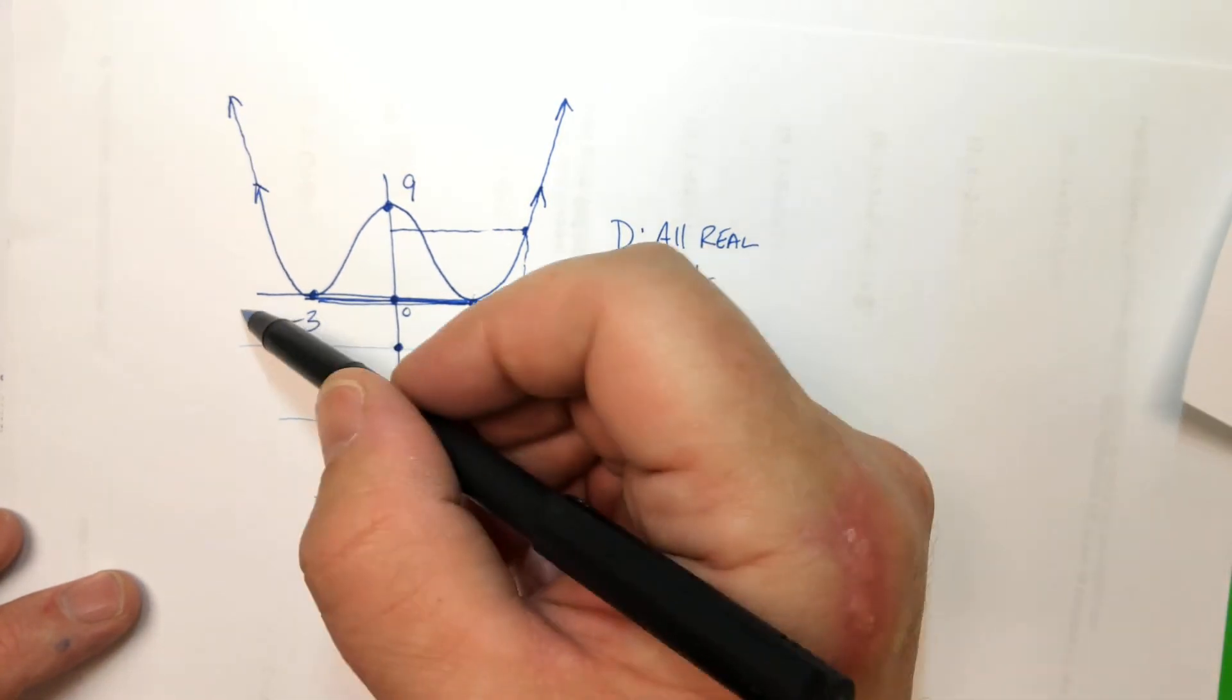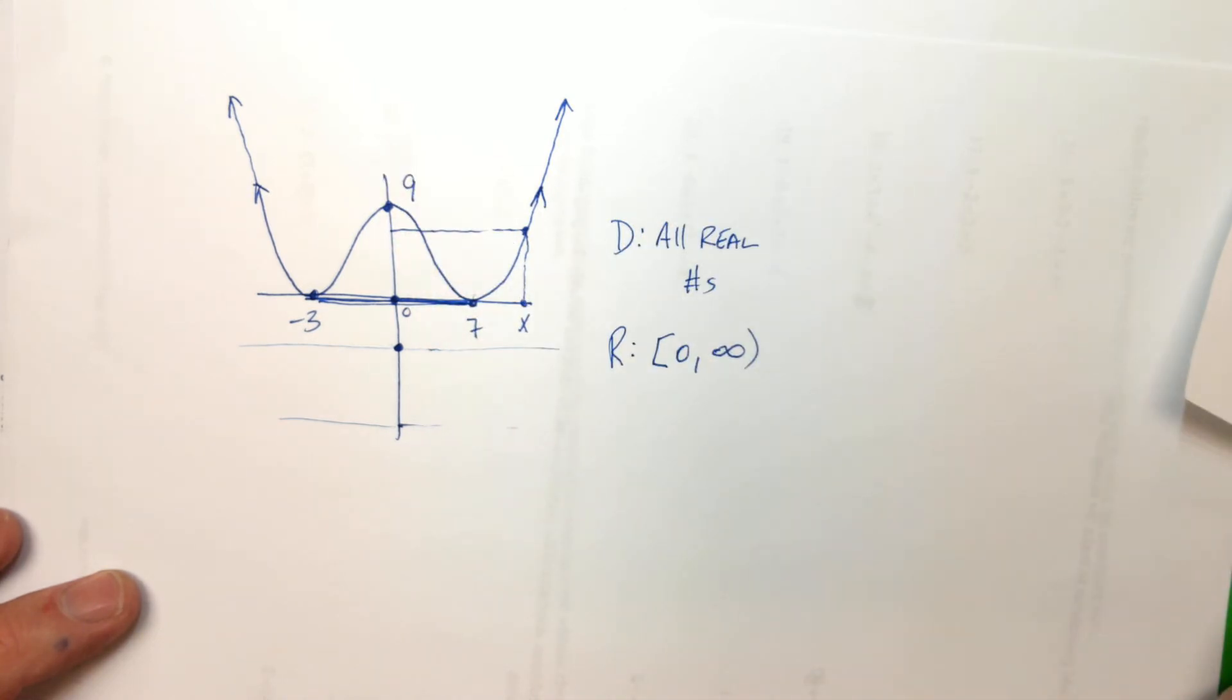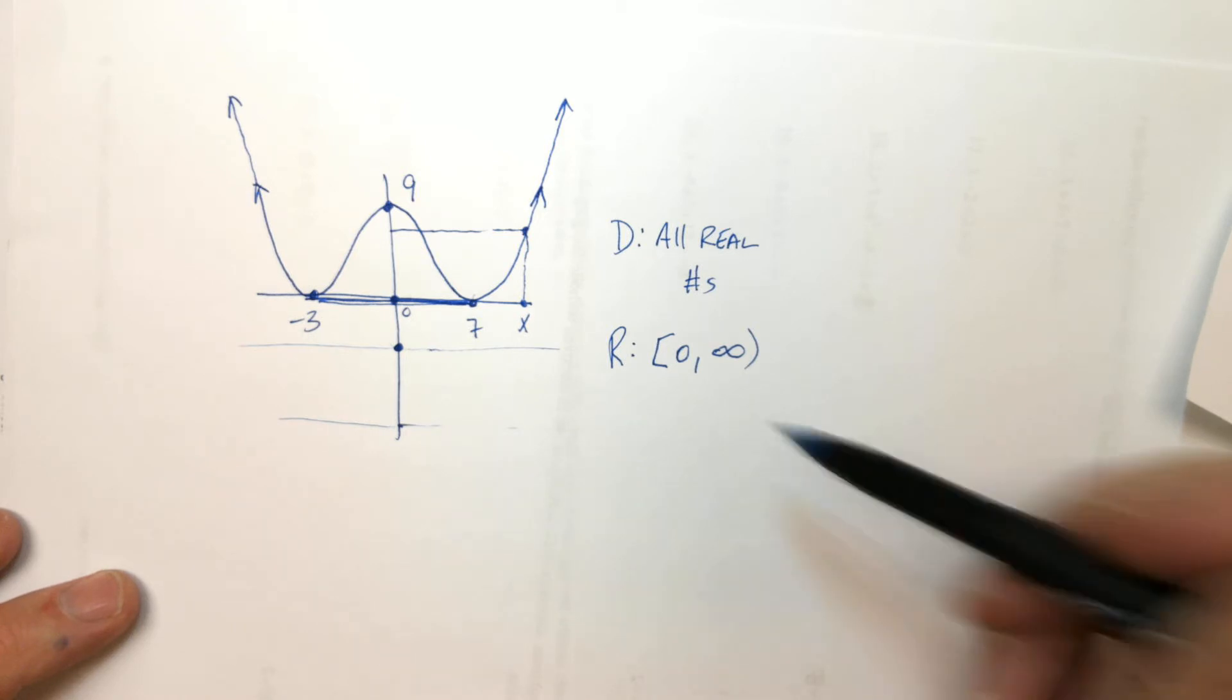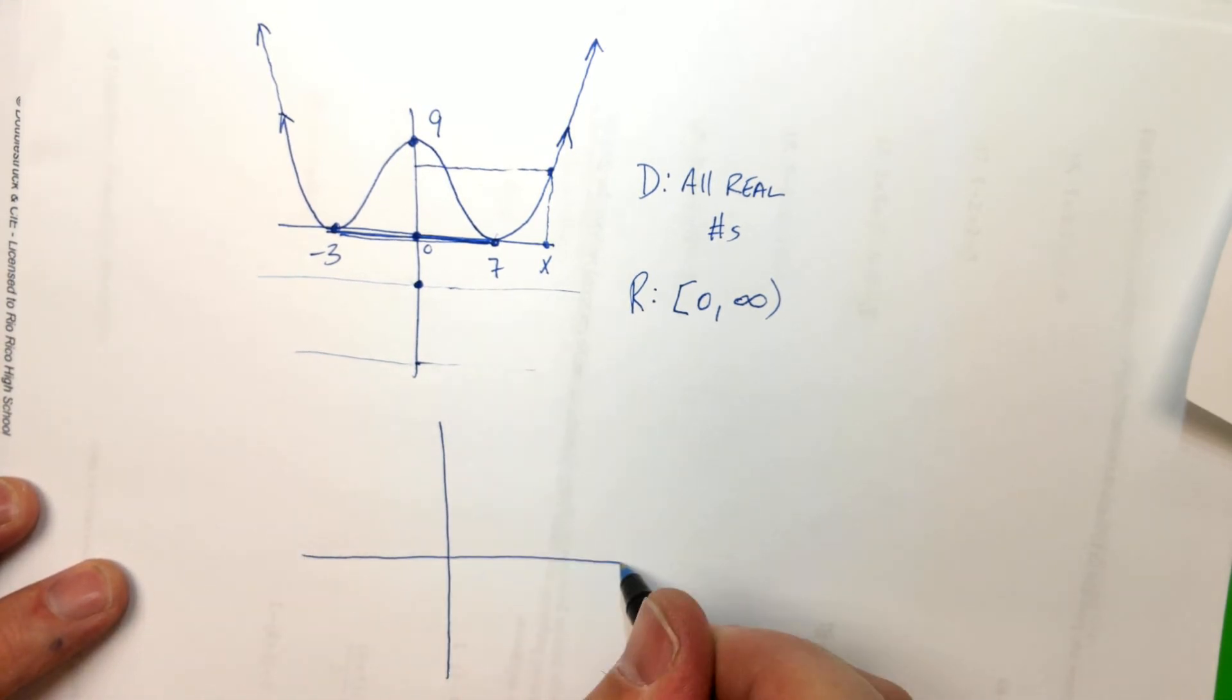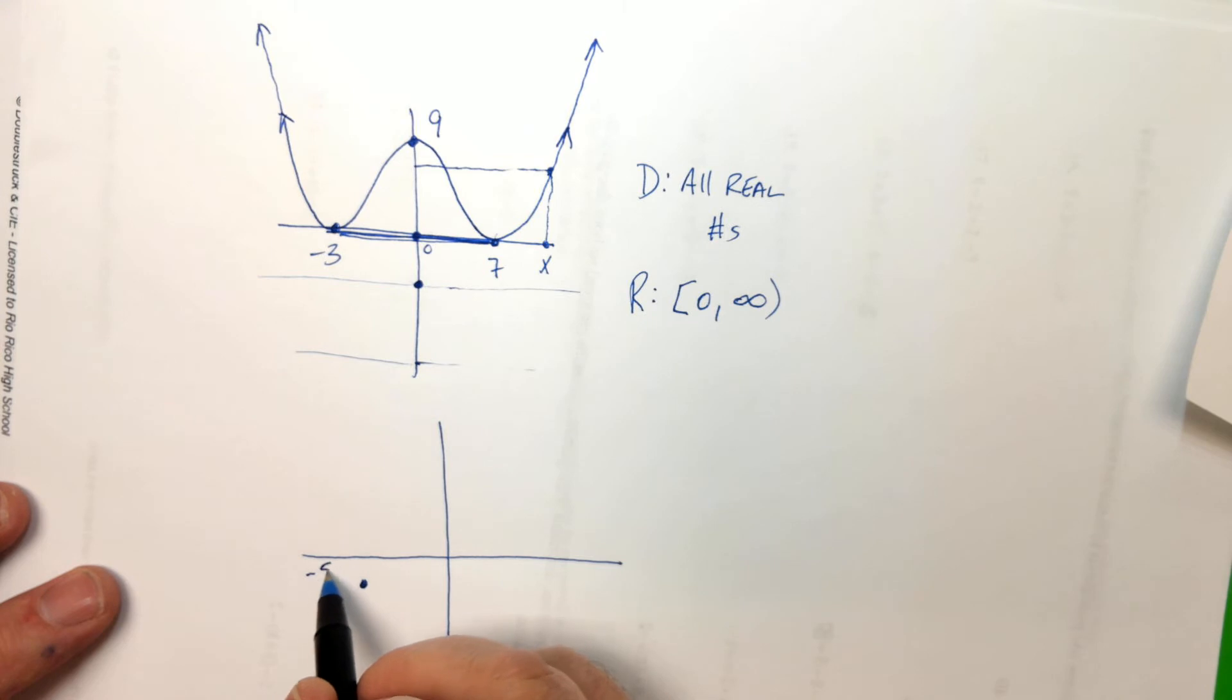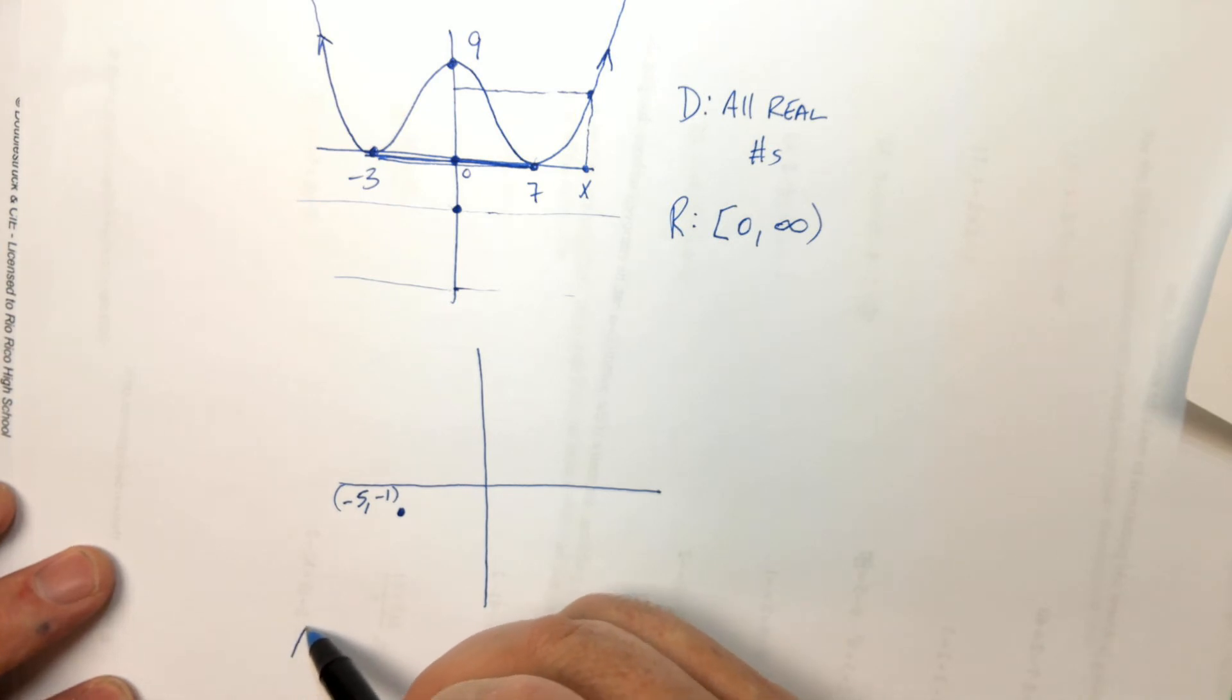So all inputs, all of the x's, all outputs, all of the y's. Questions so far? I've got one more example of this. Oh no. Let's say this coordinate was negative 5, negative 1. That coordinate right there is negative 5, negative 1. And let's say it was a parabola. Oh that's so ugly.